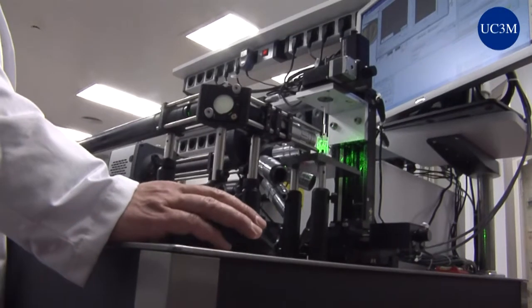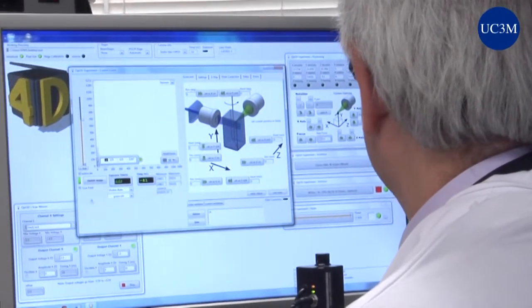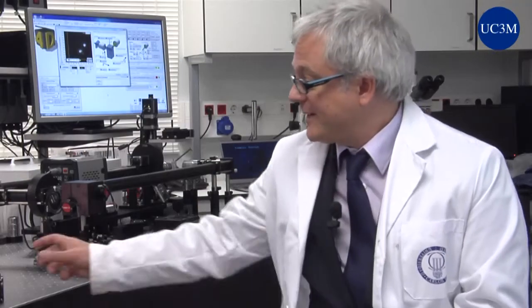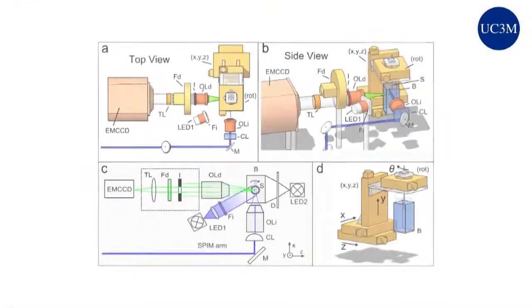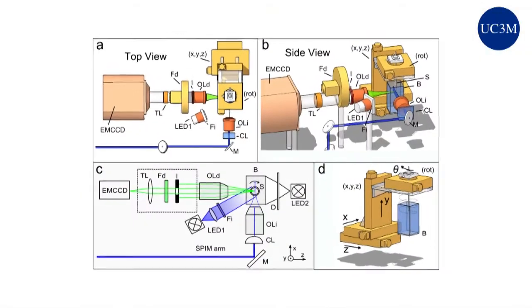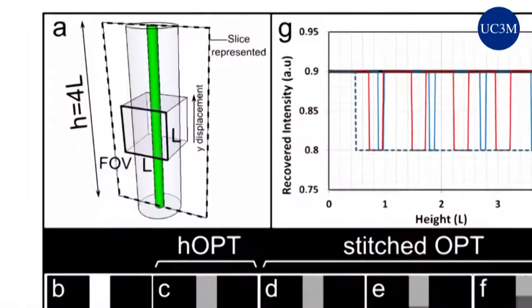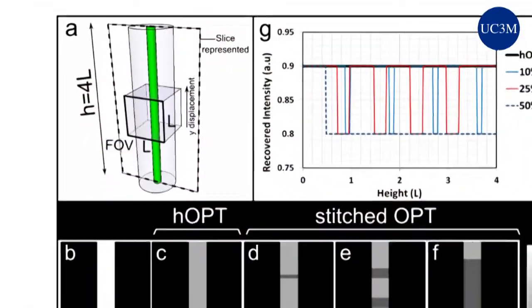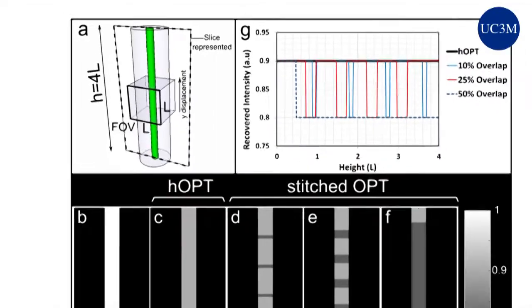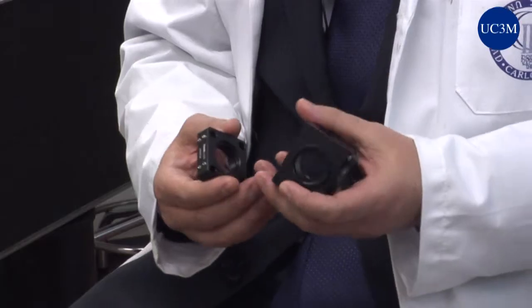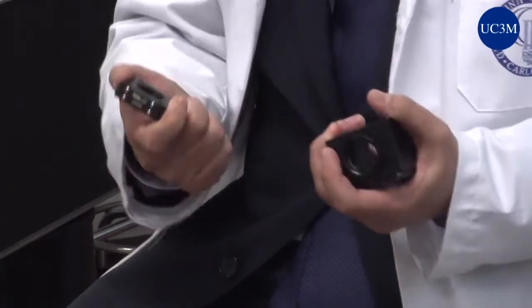Hemos montado ya varios equipos: en Alemania, en Suiza, en Grecia, en Israel. Y lo que permite esta tecnología reducir mucho los costes es el hecho de utilizar piezas modulares, como si fuese un Lego, con el que se puede montar cualquier equipo de imagen customizada y avanzada utilizando estas piezas.